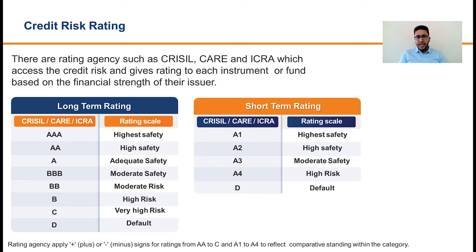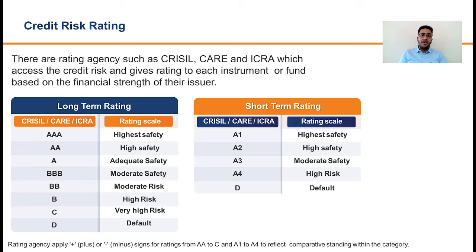Similarly, on the short-term rating scale, the rating starts from A1 and ends at D, which is the default category. Unlike long-term ratings which have both plus and minus symbols, in short-term rating you only have a plus symbol or no symbol attached. So in short-term rating, the highest rating starts at A1+, then A1, then A2+, then A2, and so on. By looking at the credit rating of the overall debt fund portfolio as well as the instruments where the fund has invested, one can form an opinion on what kind of credit risk the portfolio carries and the degree of safety you have by investing in that portfolio.